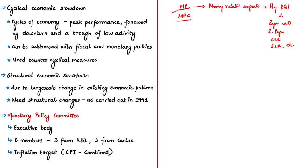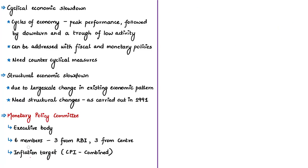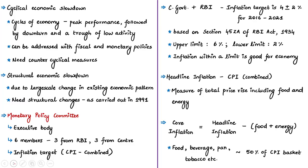As per Section 45ZB of the RBI Act of 1934, the central government must constitute a committee called the monetary policy committee. This MPC is the executive body containing six members — three from the Reserve Bank of India and three nominated by the central government — and is headed by the RBI Governor. This committee must meet at least four times a year to determine policy interest rates required to achieve inflation targets; usually it meets once every two months. The minutes of every meeting are uploaded on the RBI website, showing the transparency of its proceedings.